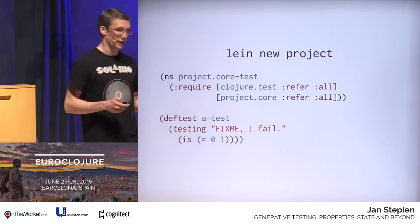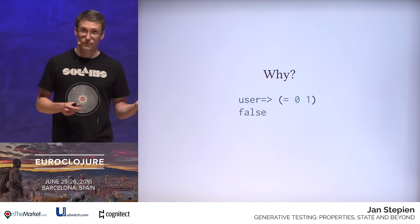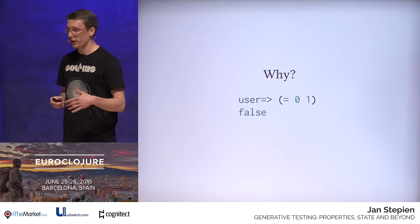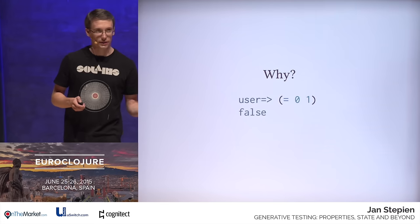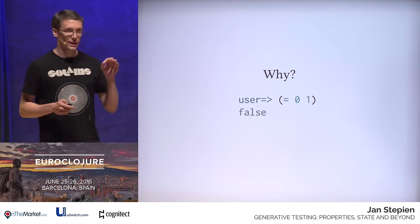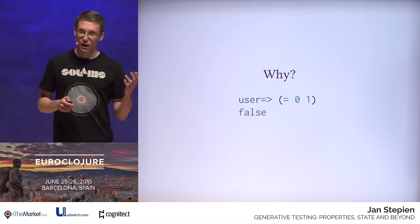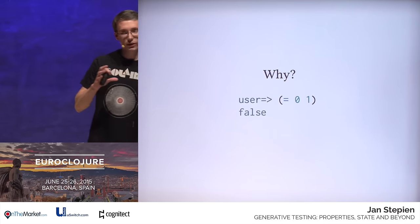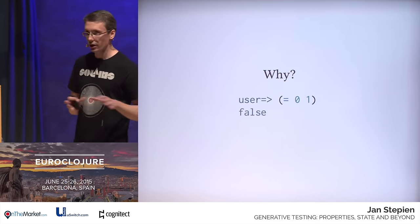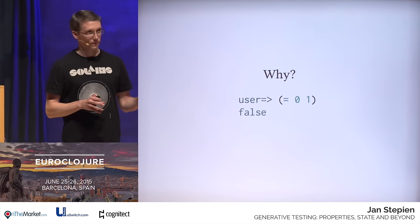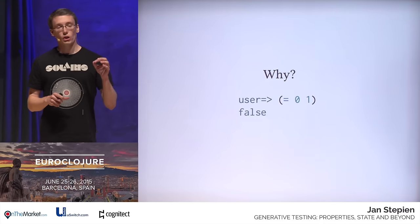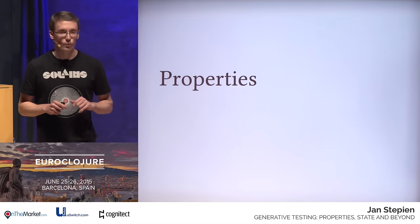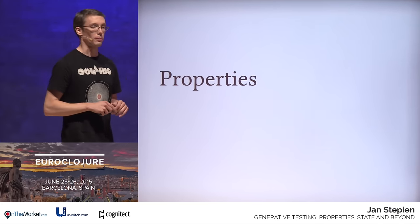But why do we test things automatically? We have the REPL, right? We could just take all of our test expressions and put them directly into the REPL and validate whether everything works as expected. We don't do this, because just like sequences in our favorite language, we are lazy. And it's a good thing — we take things which are easy and can be automated and let computers do it for us. Keeping this automation and laziness in mind, let's dig into the world of properties, the core concept of property-based testing.